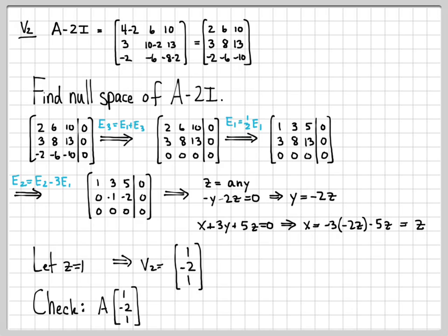We can verify: A times v2 = [2, −4, 2]ᵀ = 2 × [1, −2, 1]ᵀ. This confirms the definition of the eigenvector — when you multiply the matrix A by an eigenvector, you get back that eigenvector scaled by the corresponding eigenvalue. So v2 is confirmed.